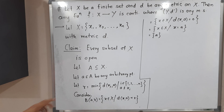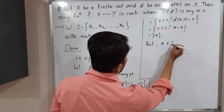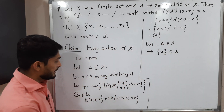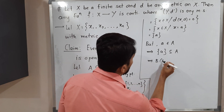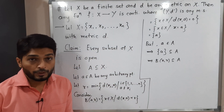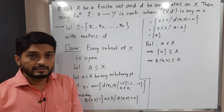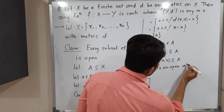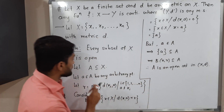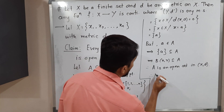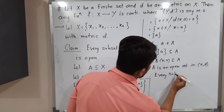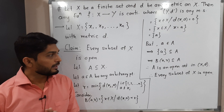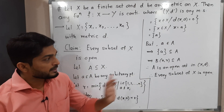We selected point a from set A, so the singleton set {a} is a subset of A. But the singleton {a} is nothing but the ball B(a, R). So B(a, R) ⊆ A. We started with any arbitrary point and found a ball around it which entirely lies inside A — this is the definition of an open set. Therefore A is an open set in (X, d). So every subset of X is open, and the proof of this claim is complete.